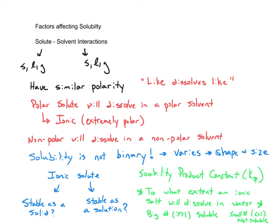These numbers get so small — on the order of magnitude of 10 to the negative 25th power. We'll go into what these numbers really mean in a future chapter, but for now I'm just introducing the concept of KSP: big numbers mean very soluble, small numbers mean not soluble, and some numbers in the middle are slightly soluble.